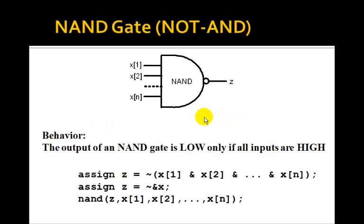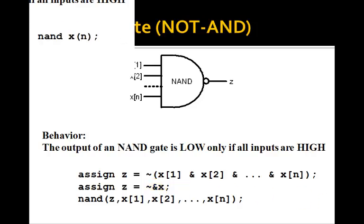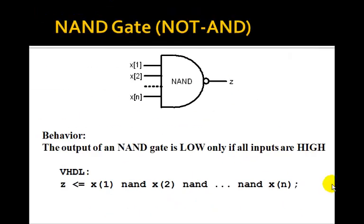For a multiple-input NAND gate, the output is low only if all inputs are high — a generalization of the two-input NAND. In Verilog, the NOT-ampersand can be used as a reduction operator. In VHDL, you write out the operator name NAND.